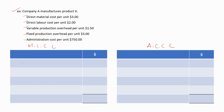Under marginal costing, we only consider the variable production costs: direct material cost per unit, direct labor cost per unit, and variable production overhead cost per unit. Fixed production overhead per unit and the administration cost per unit will not be considered, because those are not variable production costs — fixed production overhead is a fixed cost, and administration cost is a non-production cost. So the marginal cost per unit is equal to 3 + 2 + 1.5 = $6.5.